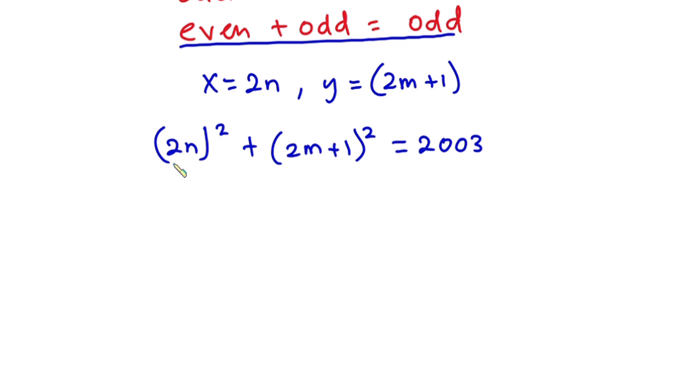Awesome. Now expanding this (2n)² we have 4n² plus, if we expand this, we have 4m² plus 4m plus 1 and this is equal to 2003. Right.